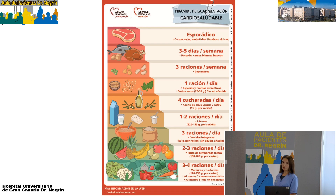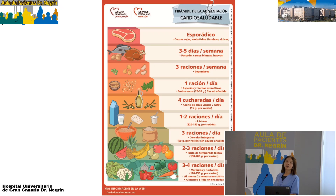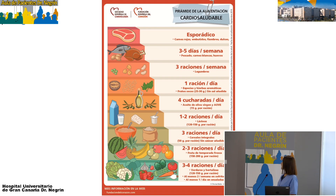Las frutas también, unas dos o tres raciones al día, pero no vale comérselas todas juntas en la misma comida, sino repartidas a lo largo del día, porque la fruta también tiene su azúcar. Luego tenemos los cereales: pan, pasta, arroz, gofio, copos de avena. Lo ideal es que todos sean integrales, por el tema de la fibra, que ayuda al tránsito intestinal, a controlar el colesterol y a evitar los picos de azúcar en la sangre.